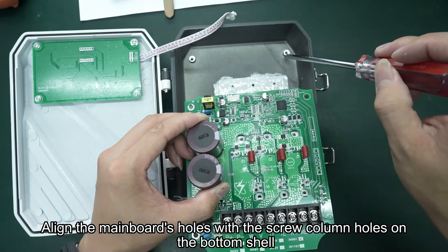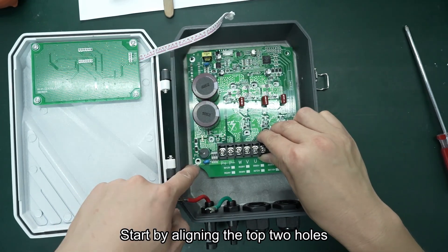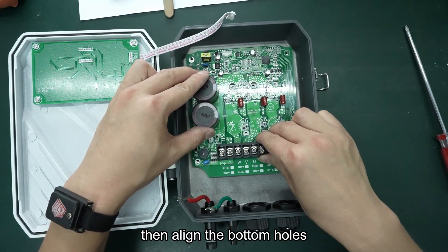Align the main board's holes with the screw column holes on the bottom shell. Start by aligning the top two holes, then align the bottom holes.